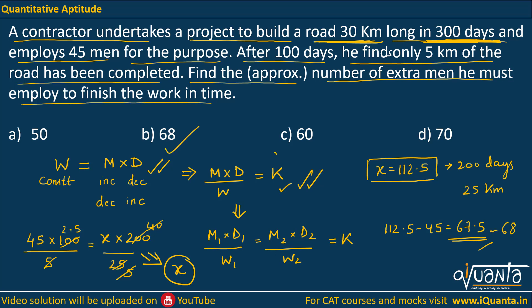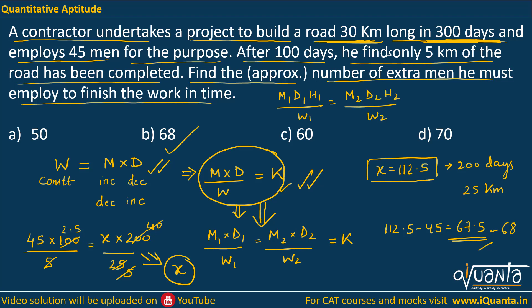We have to find the approximate number of men, so it will be equal to 68 — option B is the correct answer. The work was the same here: to build a road. Since the number of men and days are changing accordingly while the work is the same, it will be constant — that is how we transform into this relation. There will be some questions in which men work for specific hours in a day, so the relation transforms to M1 × D1 × H1 / W1 = M2 × D2 × H2 / W2, where H is the number of hours they work per day.